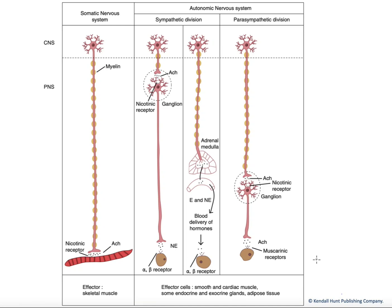In this table, we want to look at similarities and differences in how the somatic and autonomic nervous systems innervate their targets, and then compare the sympathetic and parasympathetic to one another. So first off, let's start here at the top left. We've got our somatic nervous system — the somatic motor nervous system — and that means we're going to have innervation of skeletal muscle fibers down here at the bottom.